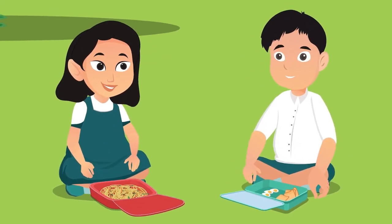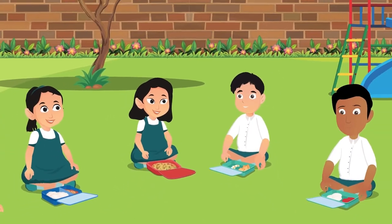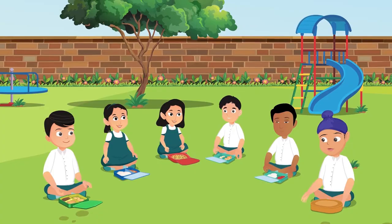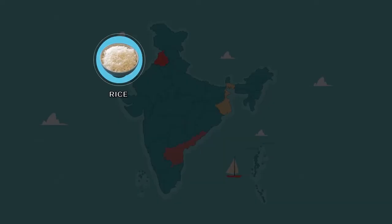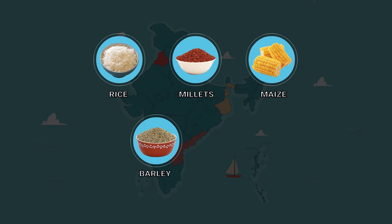The food we eat is cooked with many different kinds of ingredients, but there are a few things which are basic to the cuisine of India — for example, rice, millets, maize, barley, wheat, etc. Our food is largely made from these ingredients.